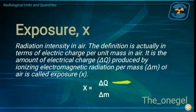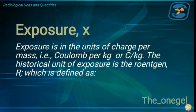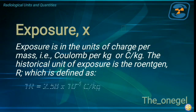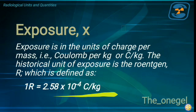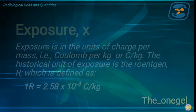Q is in terms of charge or coulombs, and mass is in terms of kilograms. Therefore, exposure is in the units of charge per mass — coulombs per kilogram. The historical unit of exposure is the roentgen, which is defined as: for every one roentgen, there are 2.58 times 10 raised to the negative 4 coulombs per kilogram. So let's have a simple exercise.